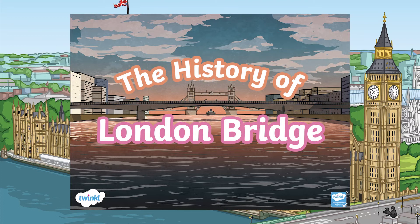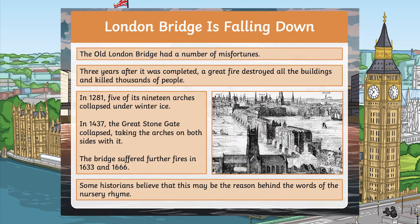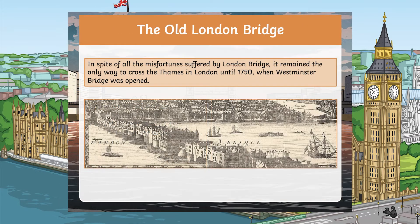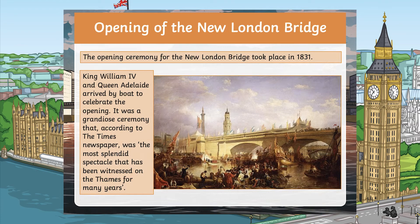This amazing presentation covers the history of the site where London Bridge is located, the history of the nursery rhyme 'London Bridge is Falling Down', the ways in which the old London Bridge fell down throughout history, the demolition of the old London Bridge, and the opening ceremony for the new London Bridge.